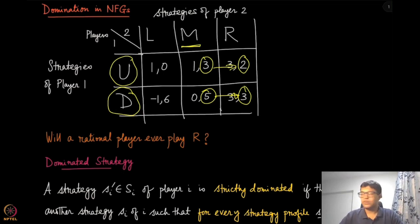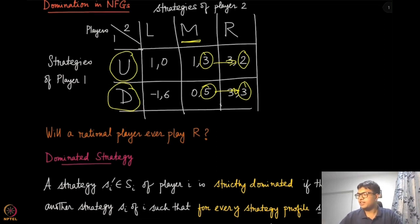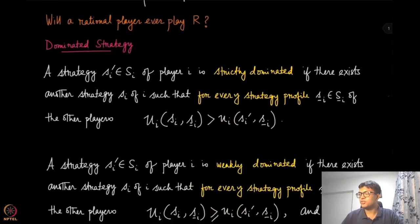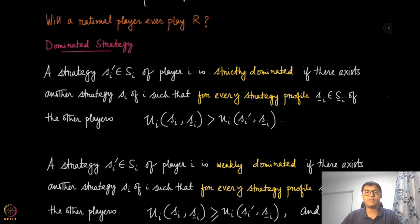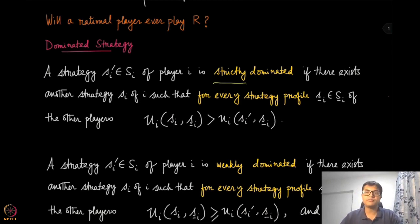In this context, we are going to say that strategy R is dominated by strategy M for Player 2. Let us make this definition a little more formal. We are going to discuss what a dominated strategy is. We say strategy Si prime of player i is strictly dominated — notice the term strictly.